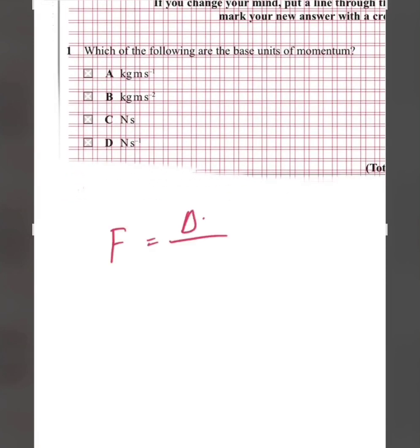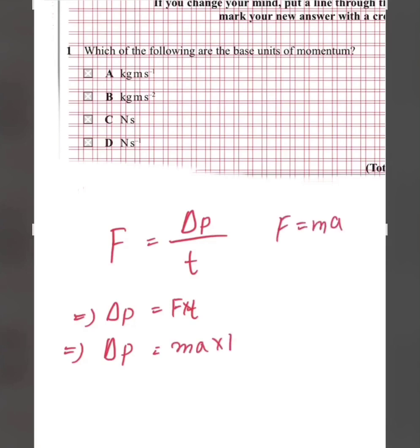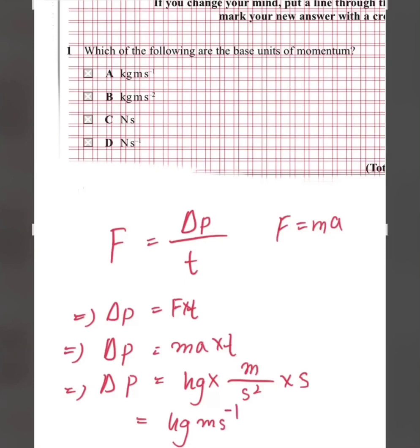Question one: which of the following are the base units of momentum? Using F = change in momentum / time, momentum equals force times time. Since F = ma, momentum = ma × t. The base unit of m is kg, acceleration is m/s², and time is seconds. This gives kg·m·s⁻¹, so the answer is A.